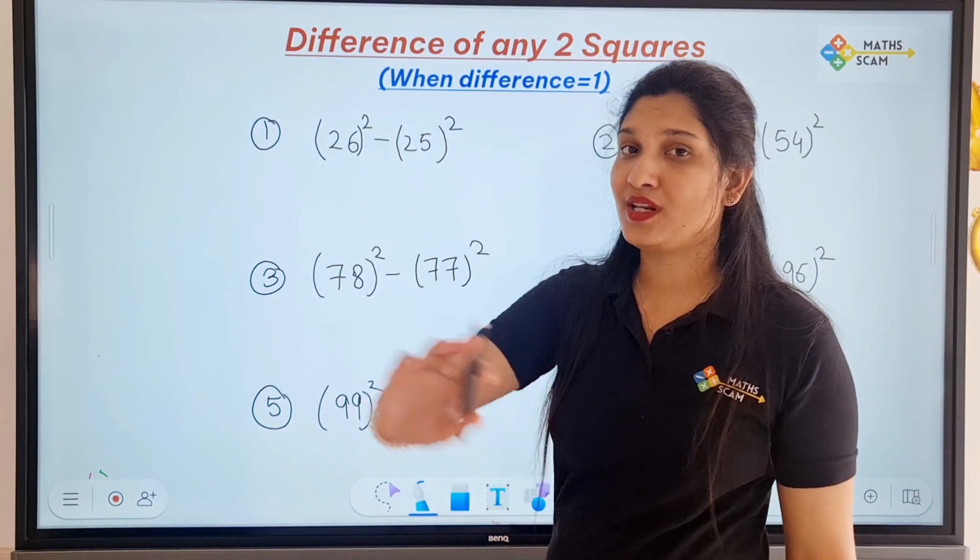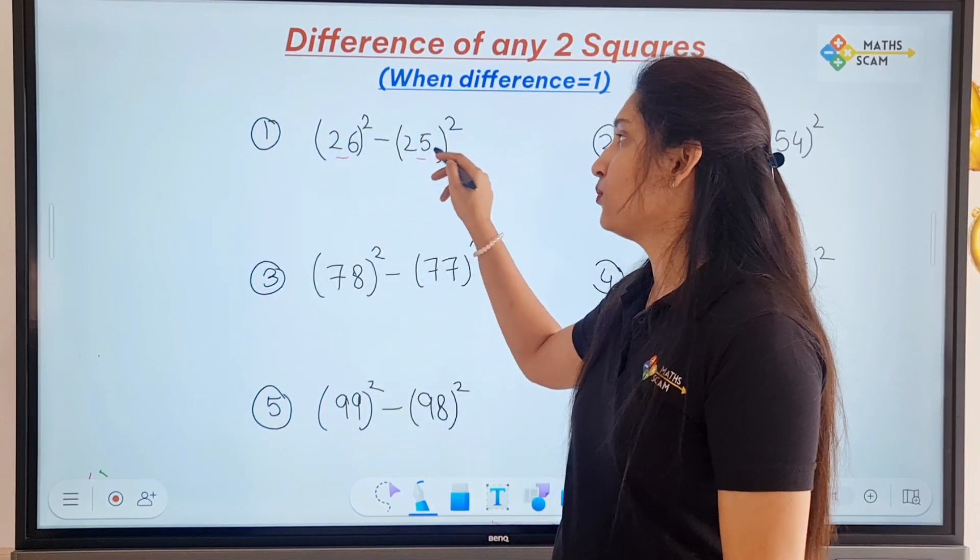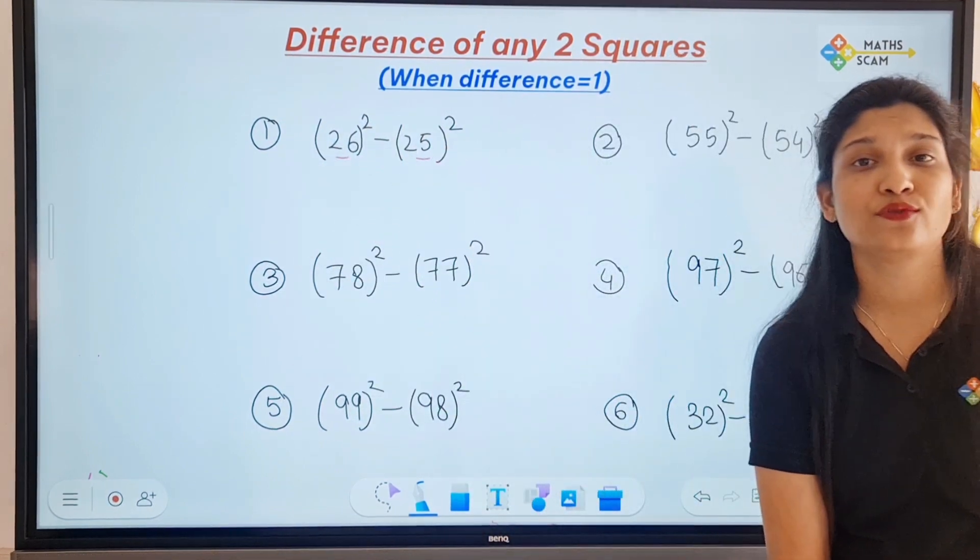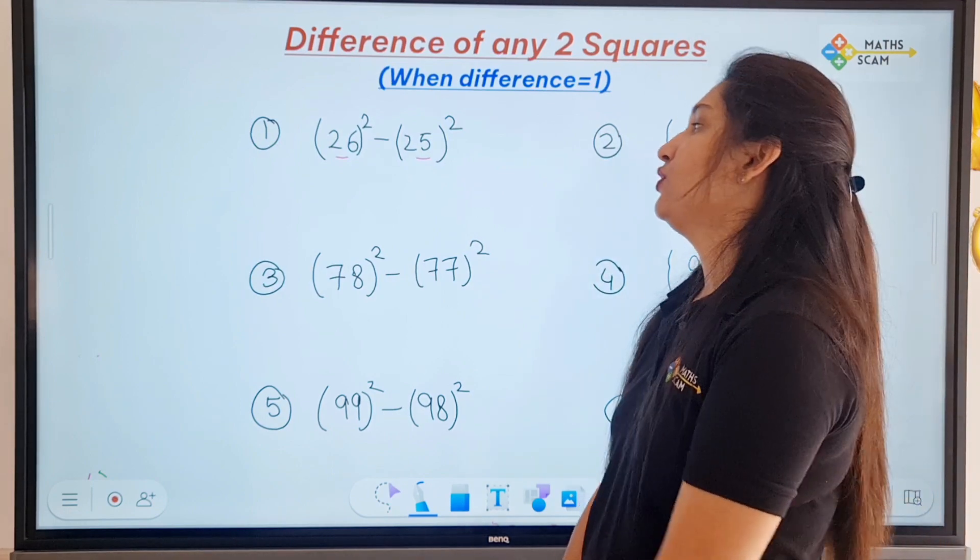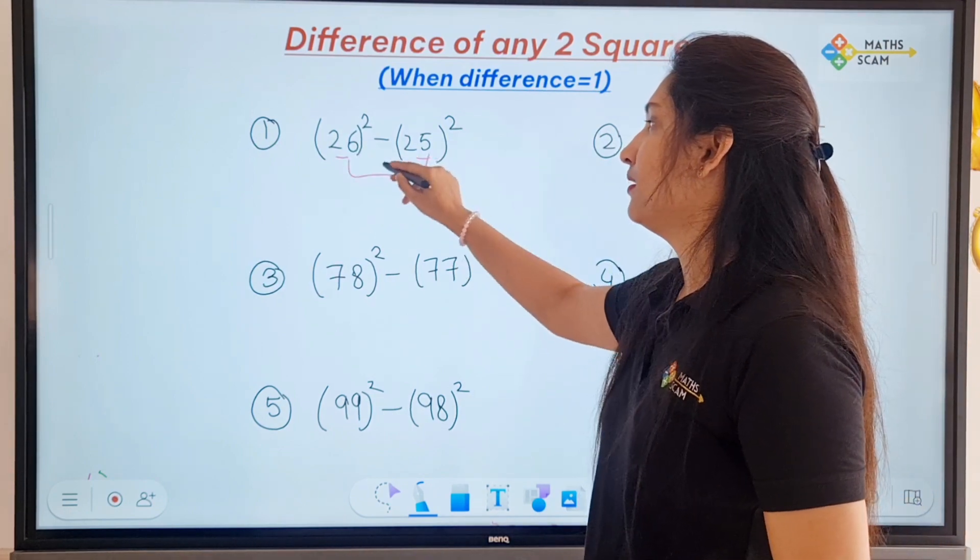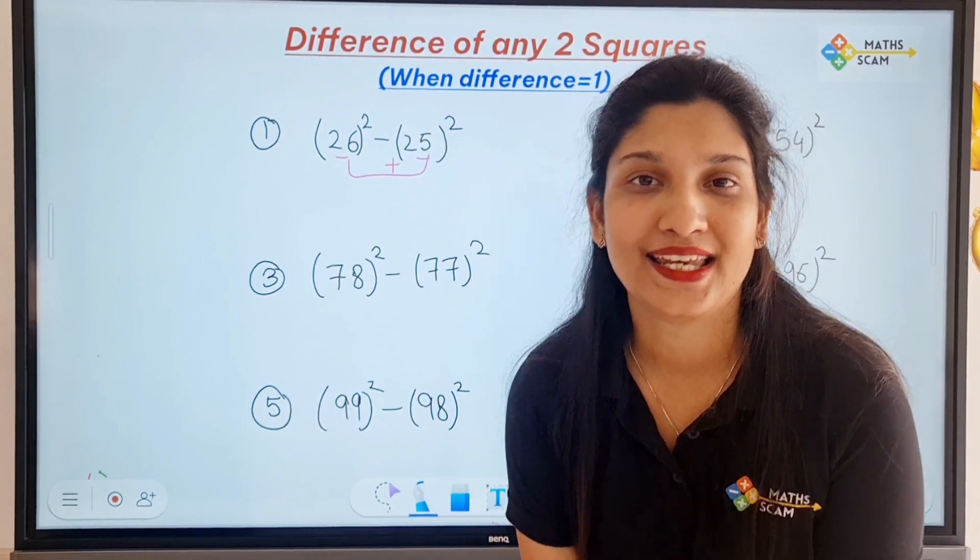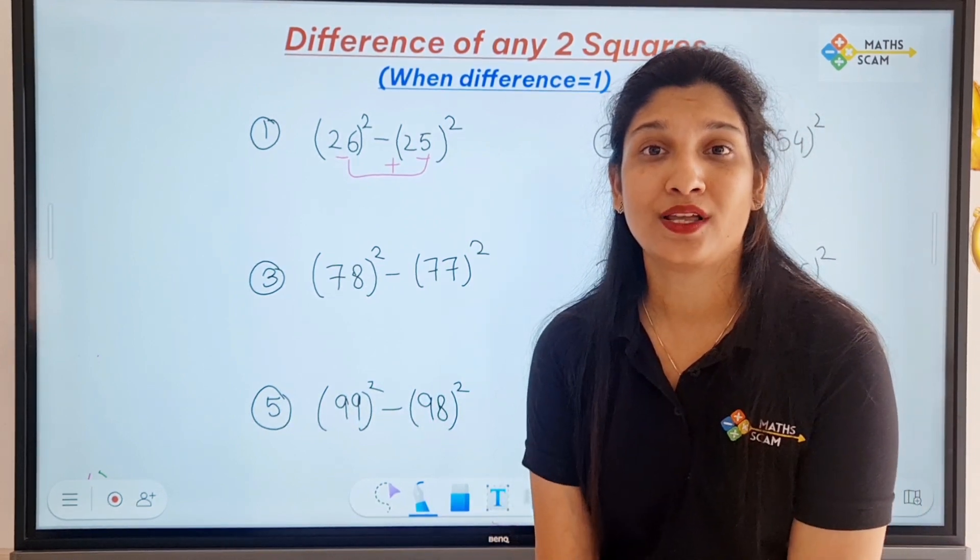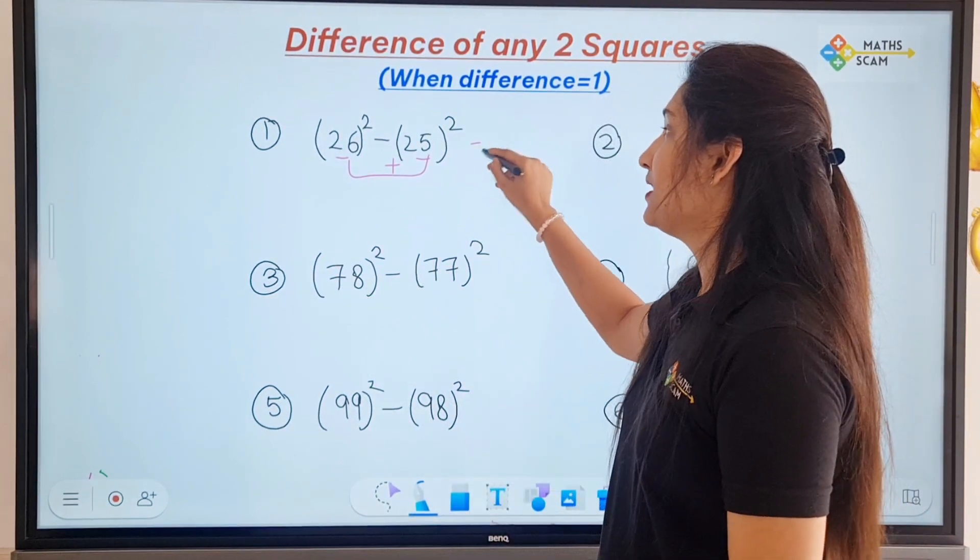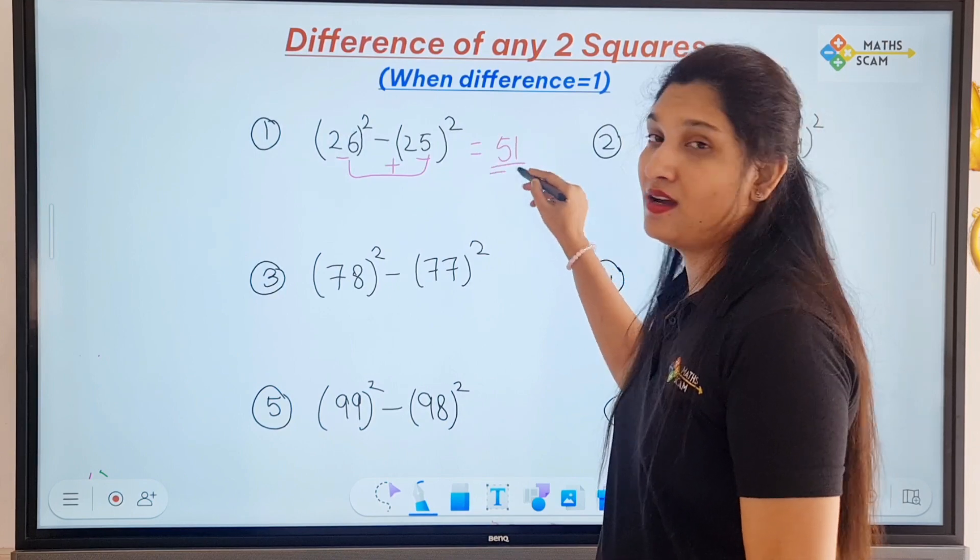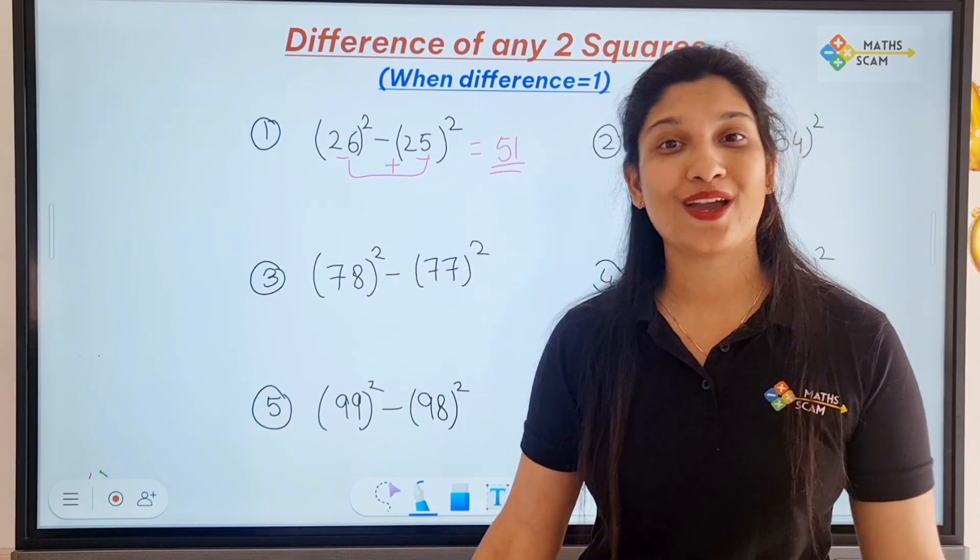But the only condition is the difference between both numbers, that is 26 and 25, should be equal to 1. So what you have to do is just simply add these numbers. So 26 plus 25 is 51, and that is the difference between two square numbers.